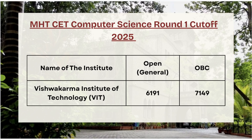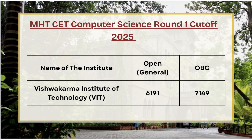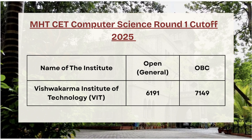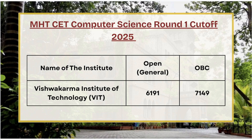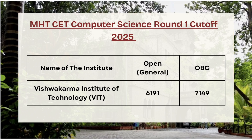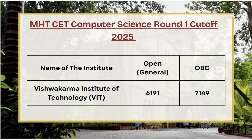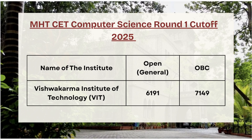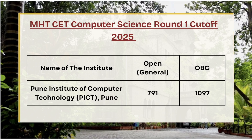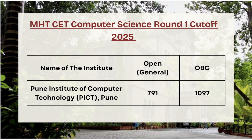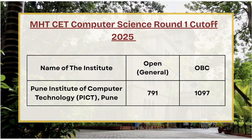Next in the list we have VIT. For open category the cutoff rank is 6191, and for OBC category the cutoff rank is 7149. If you wish to know the cutoff for any specific college, course, or category, mention it in the comment box. Moving ahead, we have TICT Pune — open category cutoff rank is 791, OBC cutoff rank is 1097.